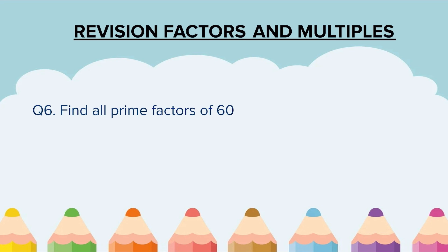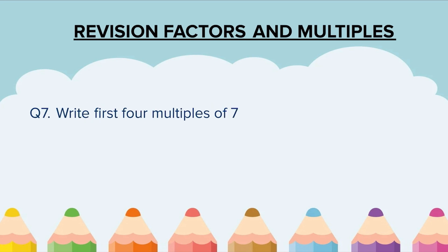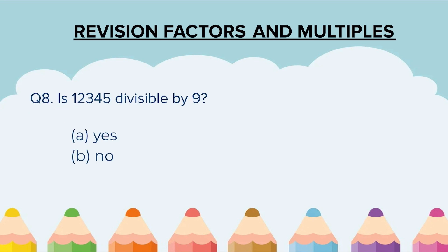Question 6. Find all prime factors of 60. Question 7. Write first 4 multiples of 7. Question 8. Is 12,345 divisible by 9?